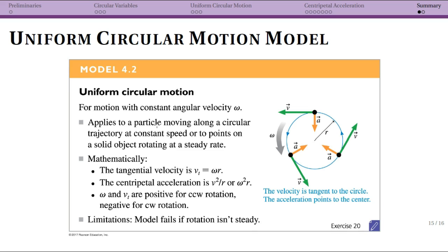Mathematically, we can relate our tangential velocity — which is the magnitude of the linear velocity vector — to our angular speed omega multiplied by the radius of the circle it's traveling in.